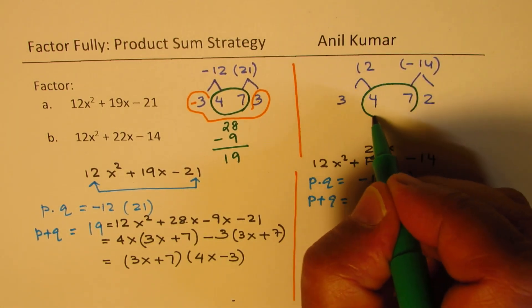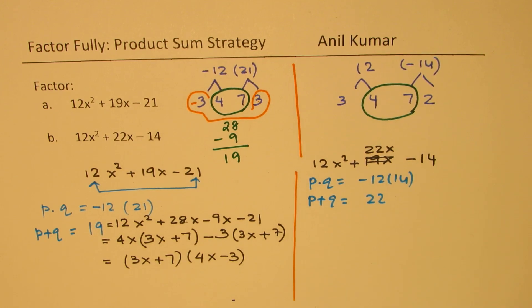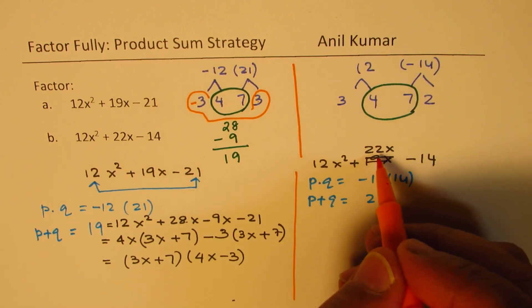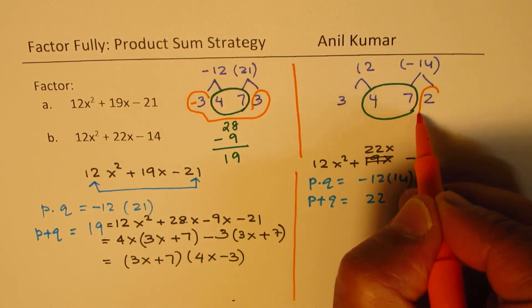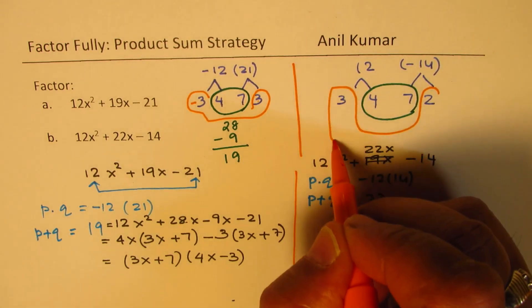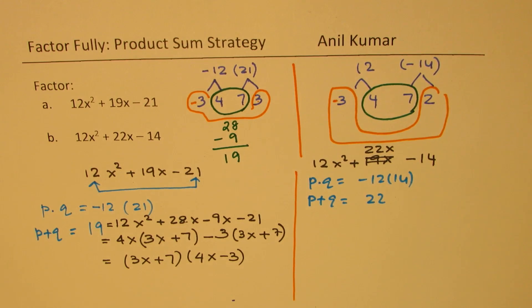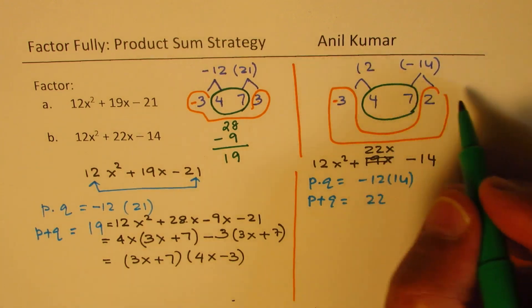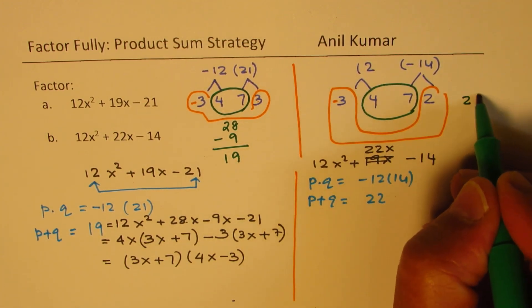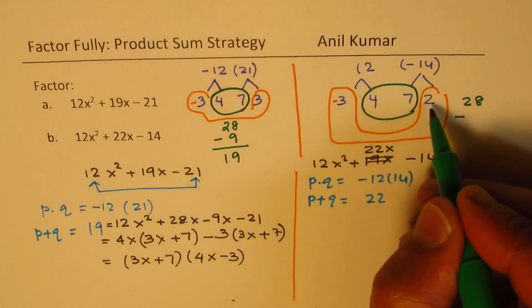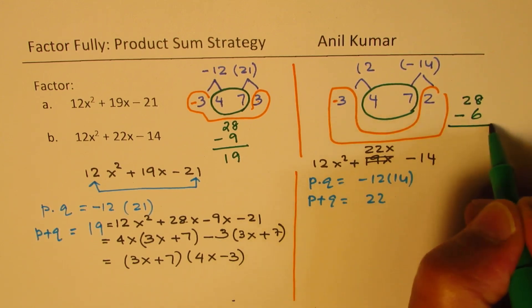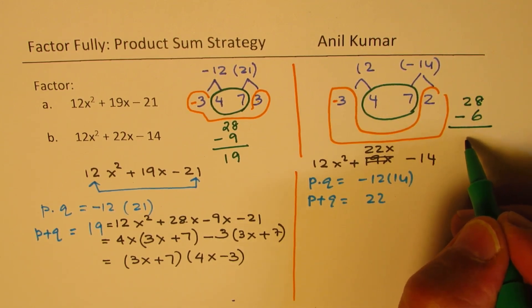4 times 7 is 28. And if I take that as positive, we need 22. And we take away this value with a -3 for example, or -2 for that matter. We get our answer. So what we have here is 28 - 3 times 2, 6. That gives you what is required, which is 22.